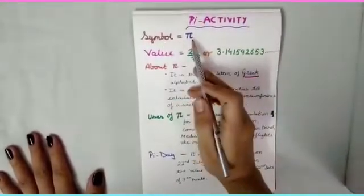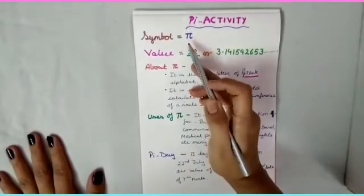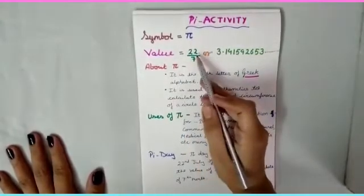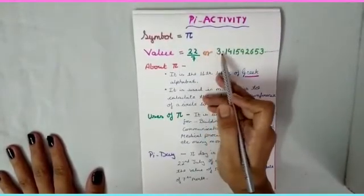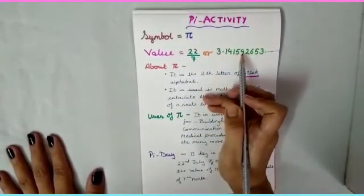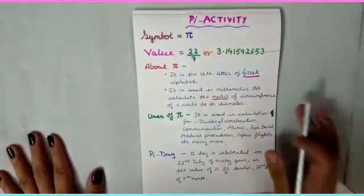The symbol of pi is represented by this sign. It is a symbol. And what is the value of pi? The value of pi is 22 upon 7. And if you divide this, you will get this number 3.141592653 and so on. It is a never ending value.